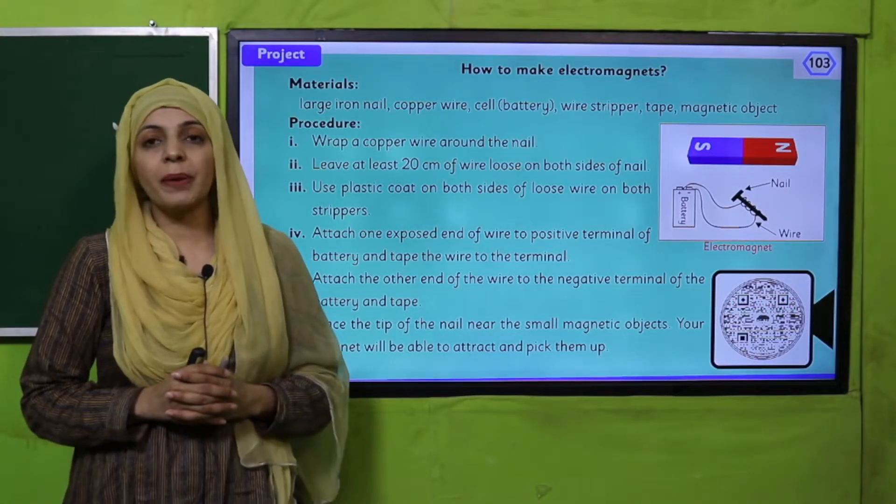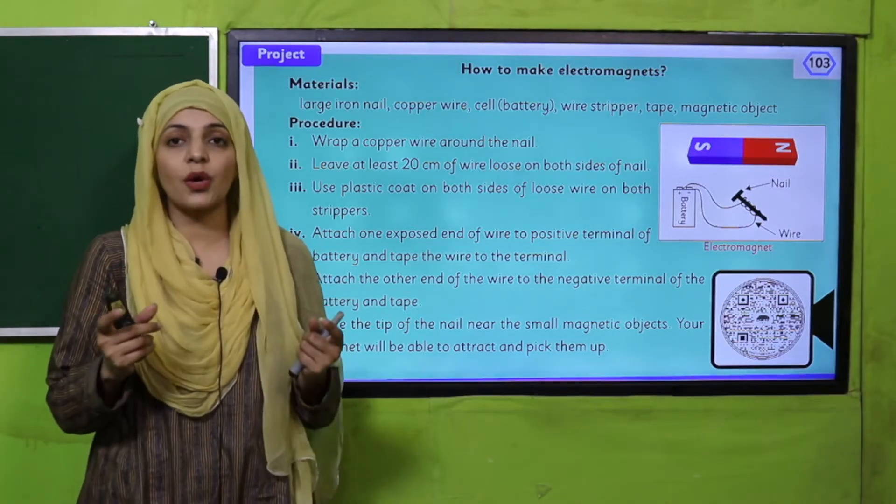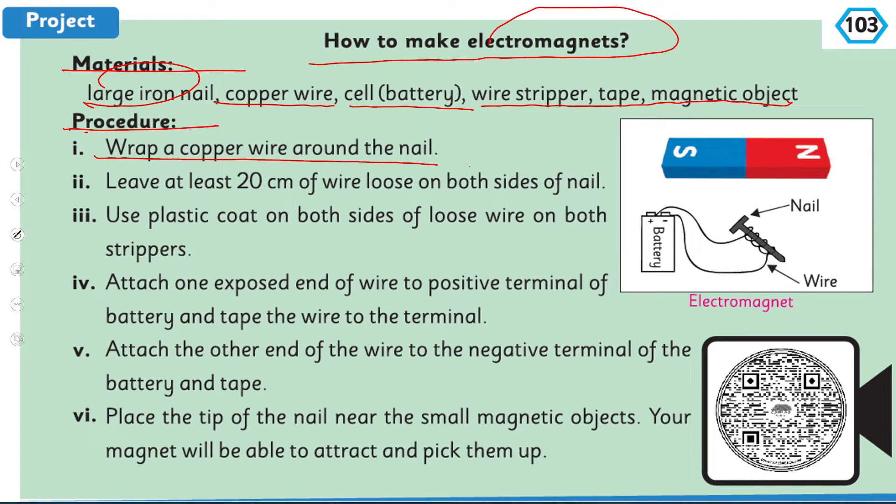I hope everybody has opened the page. Let's quickly read out the material that is required and the instructions also. How to make electromagnets: material required is large iron nail, copper wire, cell battery, wire stripper, tape, magnetic objects. Now the procedure is: wrap a copper wire around the nail, leave at least 20 centimeters of wire loose on both sides of the nail. Use plastic core on both sides of the loose wire. On both strippers, attach one